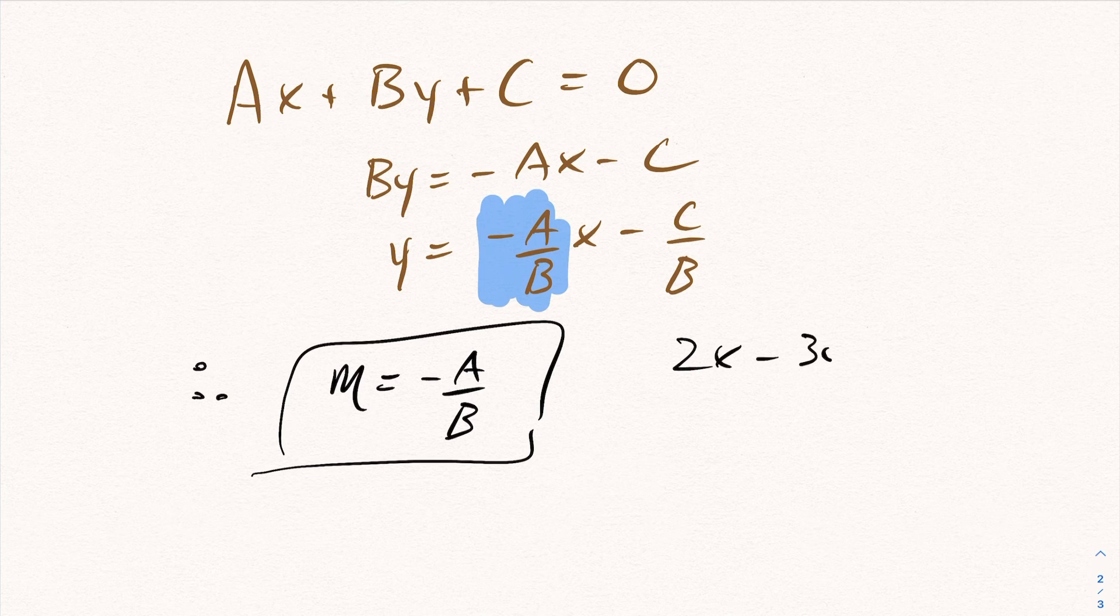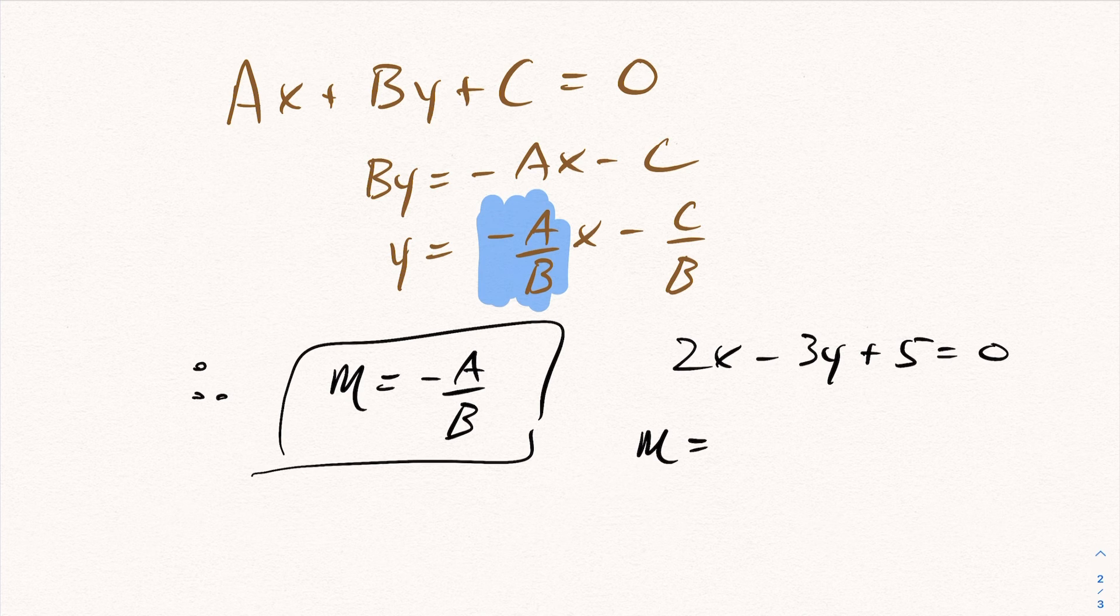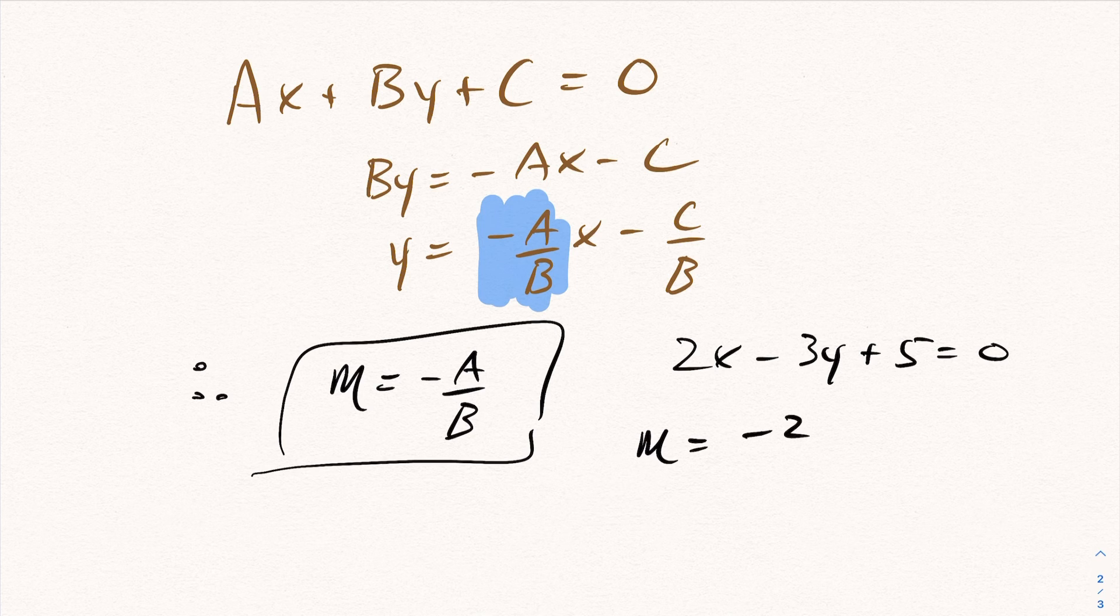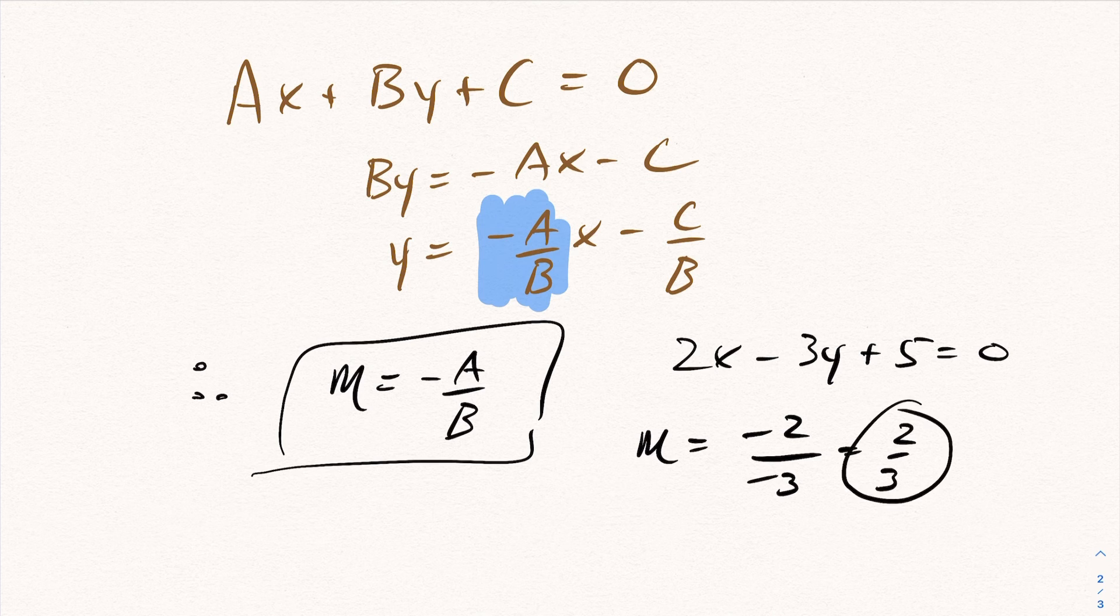Let's say you have the equation 2x minus 3y plus 5 is 0. If I want the slope, I don't have to do like I had done above and put it in y equals mx plus b. You can just do negative A, so negative 2, over negative 3, and the slope is 2 thirds.